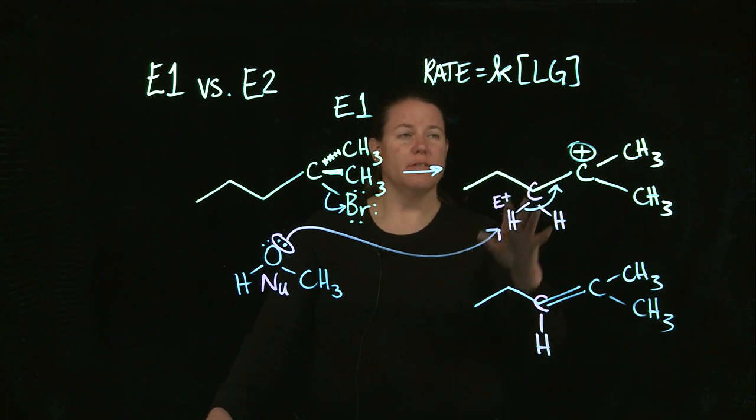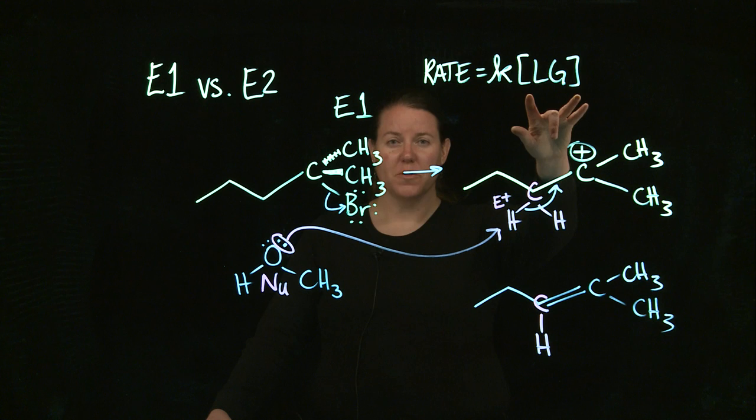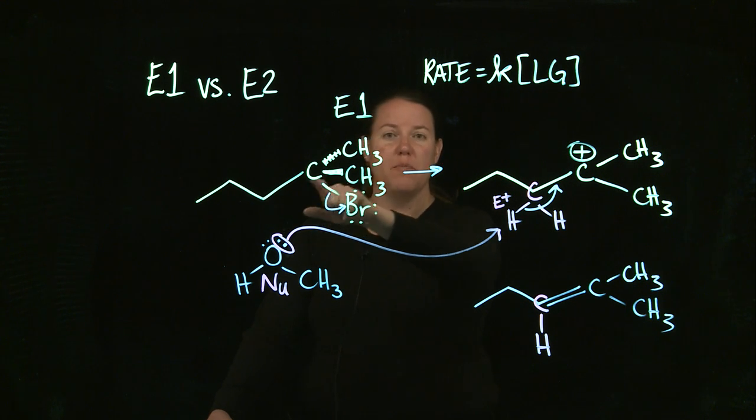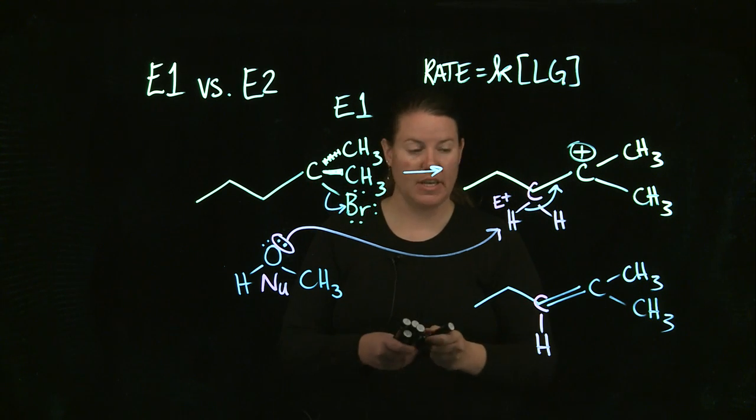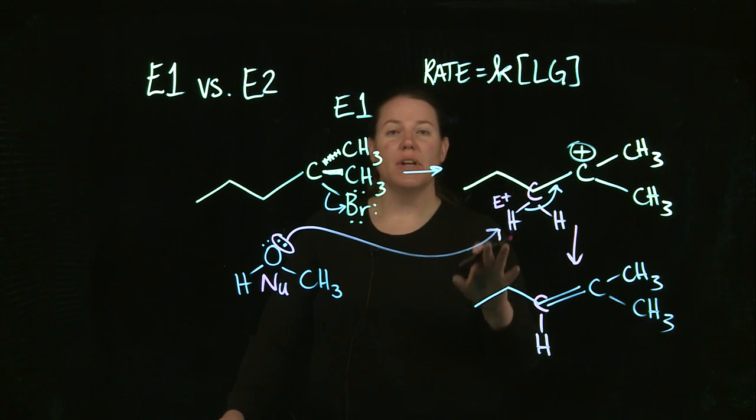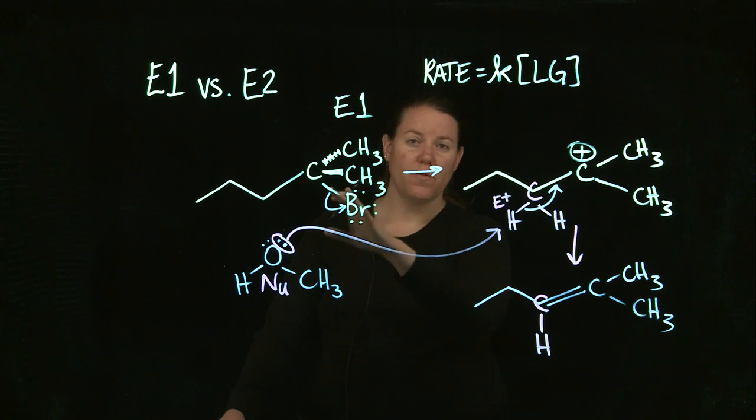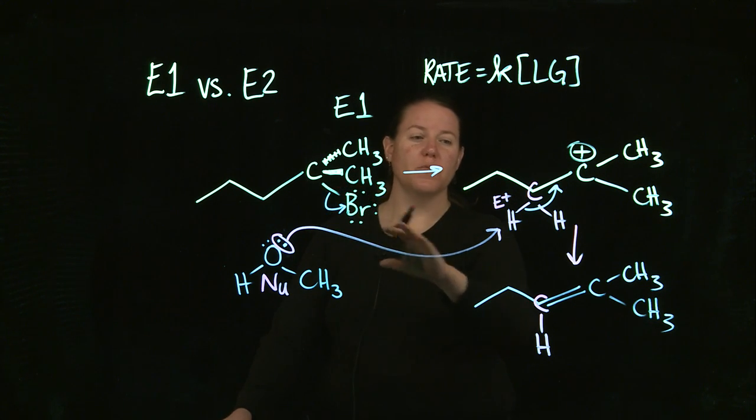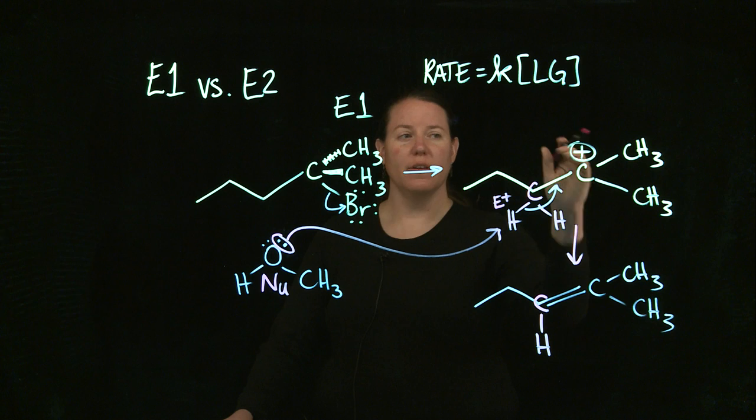Ones. Kinetics, first order. It happens in two steps at least. This is one, two steps. But in terms of thinking about it, you form, the ones always form the reaction intermediate. And that is the carbocation.